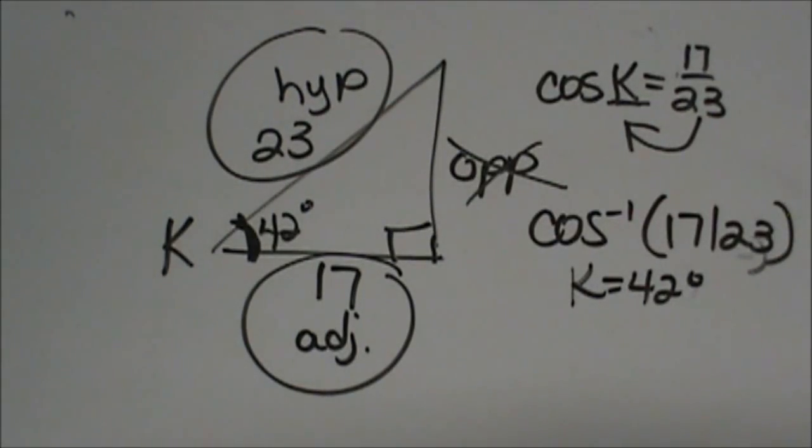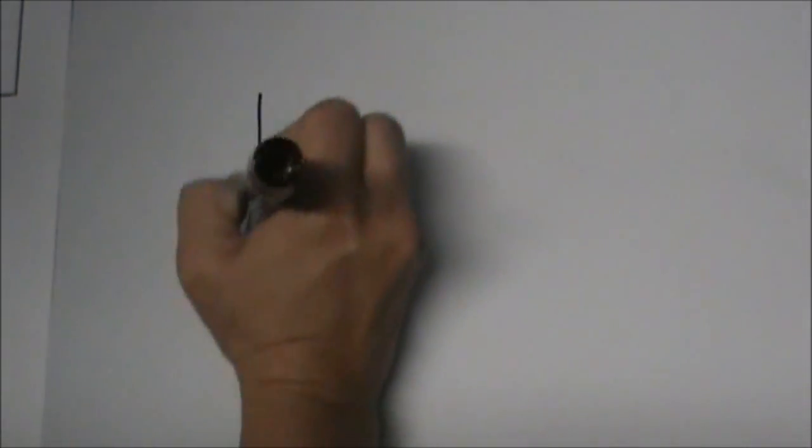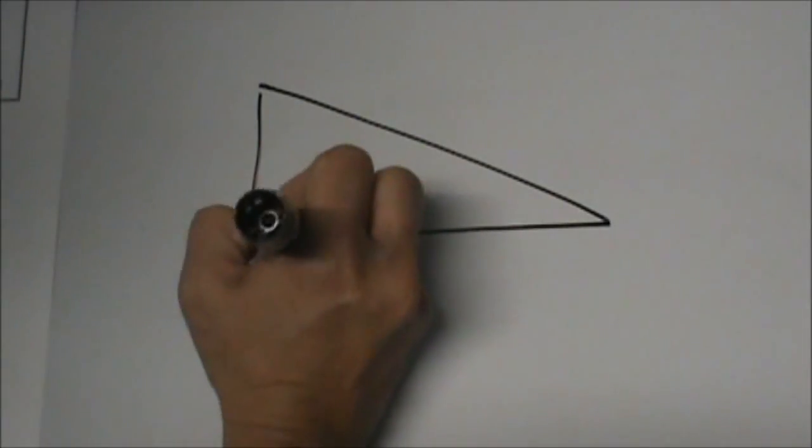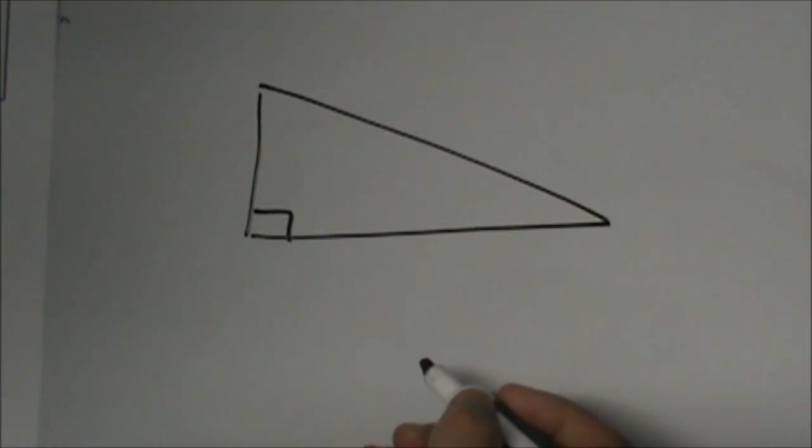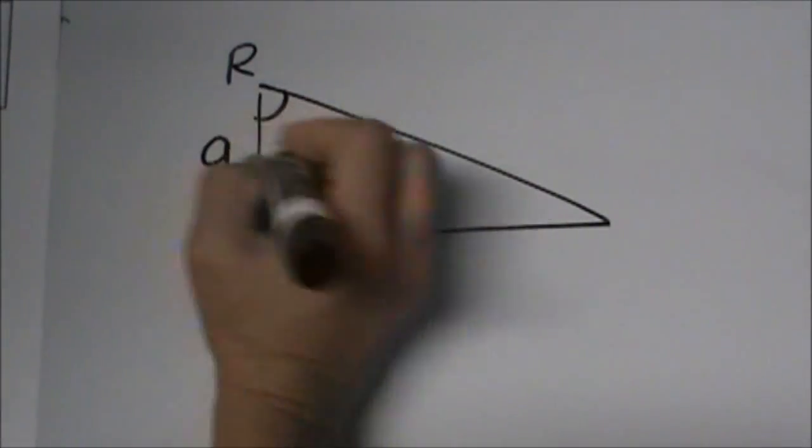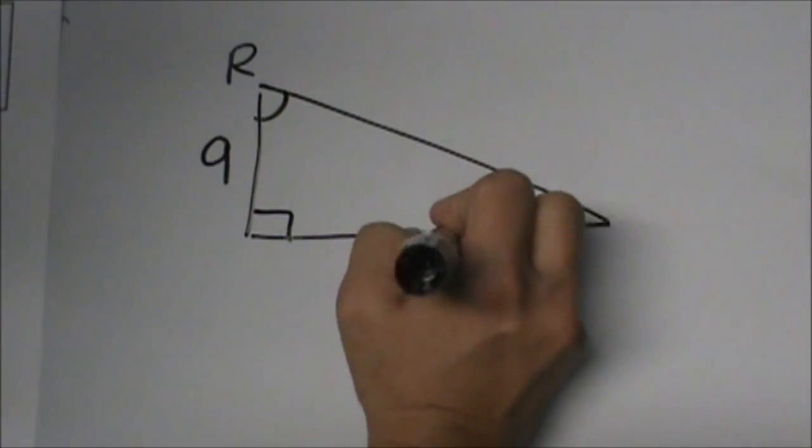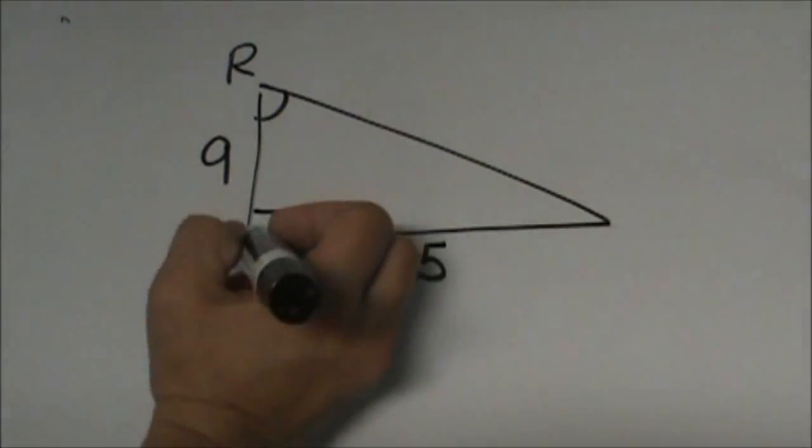So let's try problem 3. Again, if you didn't catch that, you can always pause and go back and rewatch this. This one we are looking for angle R. We have 9 here and 25 here. So here is our right angle.